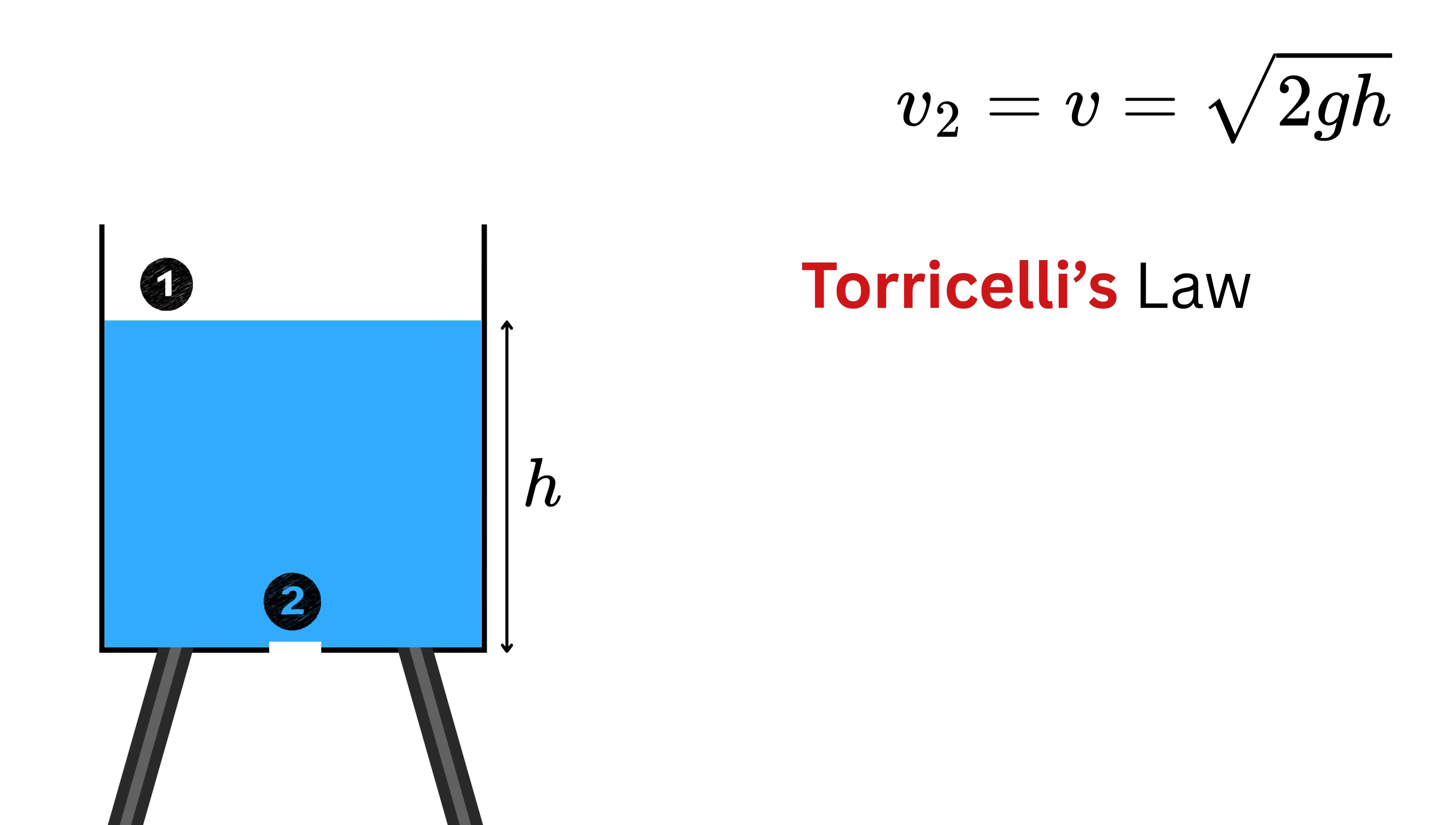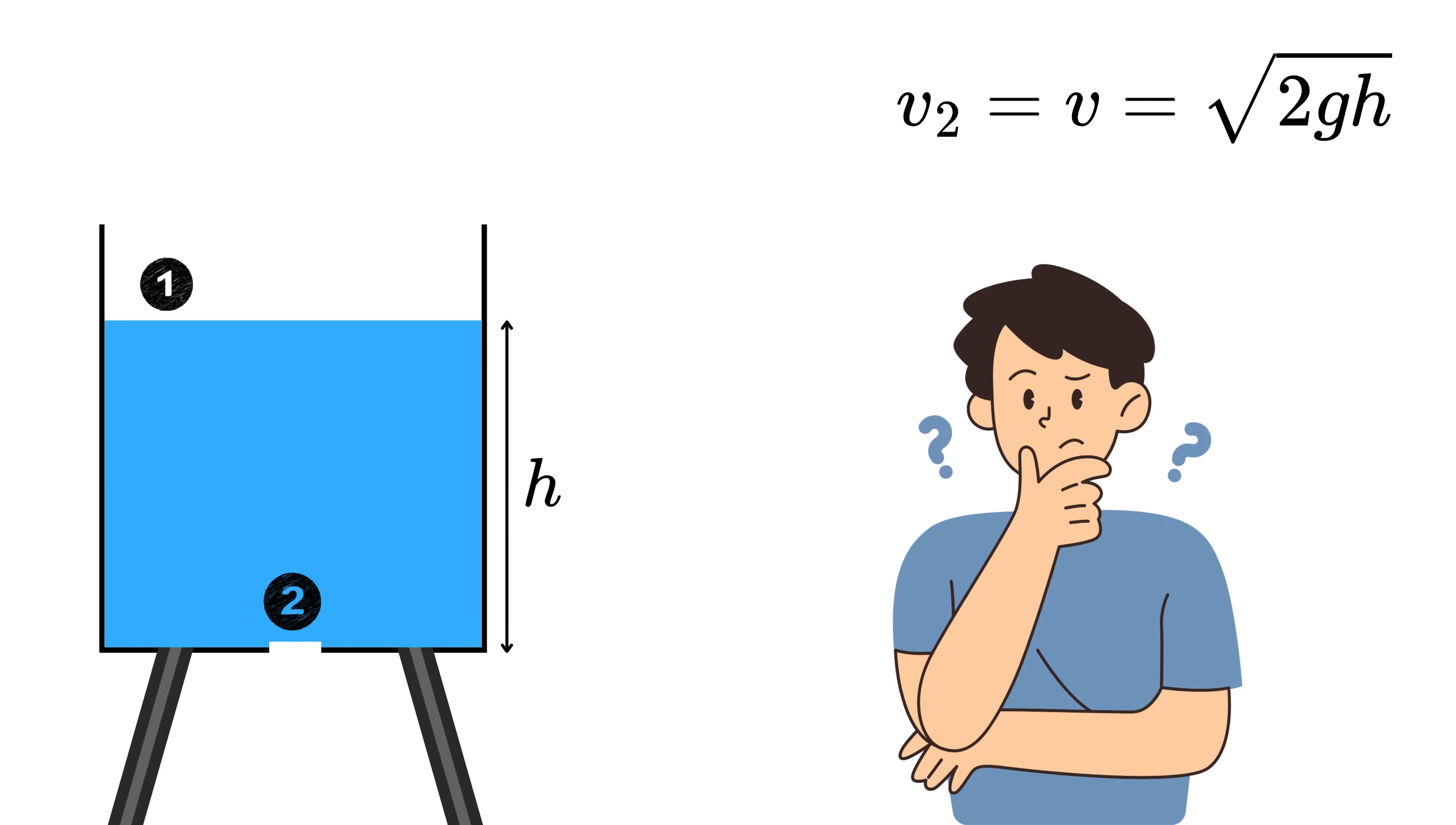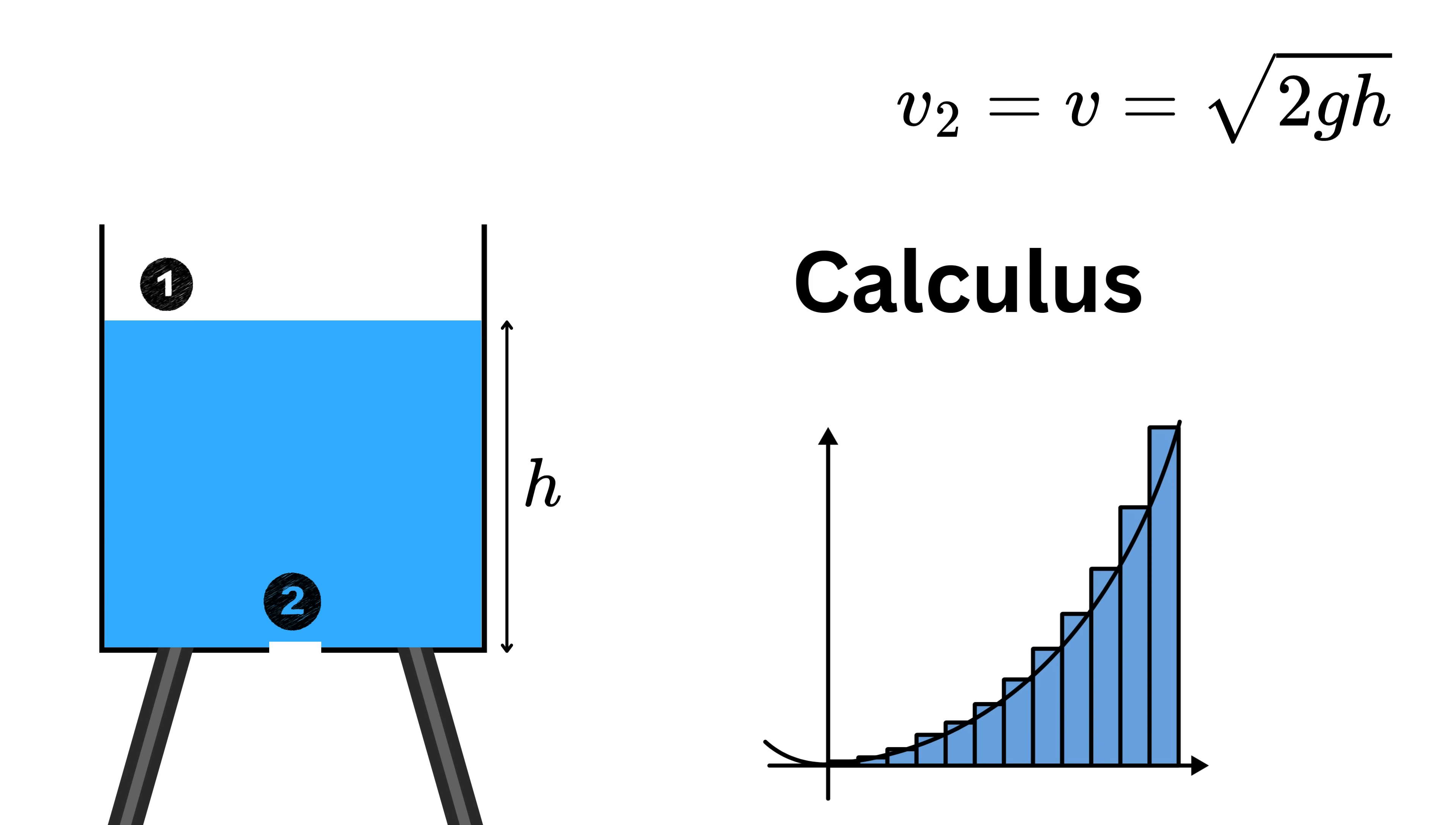This is called Torricelli's Law, and it's a magical shortcut to find how fast water comes out from a hole in a tank. But we are not done yet, because we need to find out the time it takes for the tank to fully empty, and for that we need to bring in calculus.